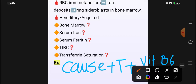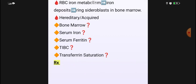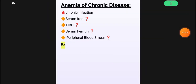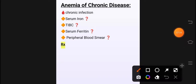This is all about sideroblastic anemia. Next ہم نے بات کرنی ہے anemia of chronic disease — اس کو بھی Step Up سے cover کرنا ہے۔ Anemia of chronic disease میں chronic infection ہوتا ہے جس کی وجہ سے anemia ہو رہی ہے — اب کیسے ایک chronic infection کی وجہ سے anemia ہو رہی ہے، یہ سمجھتے ہیں۔